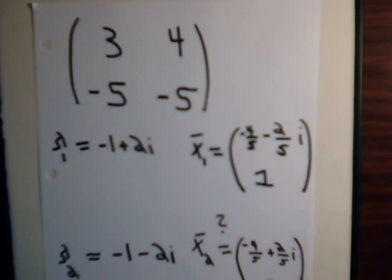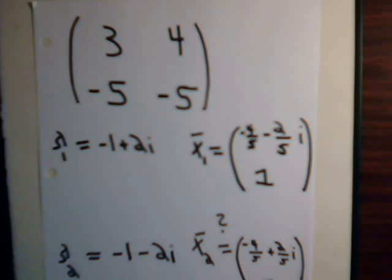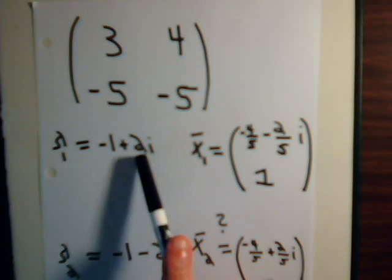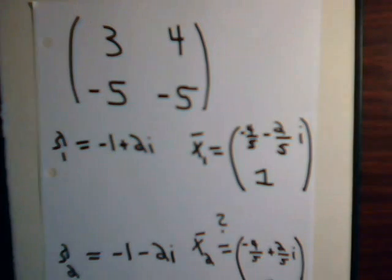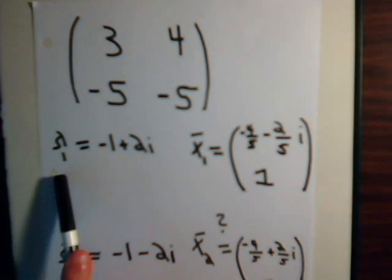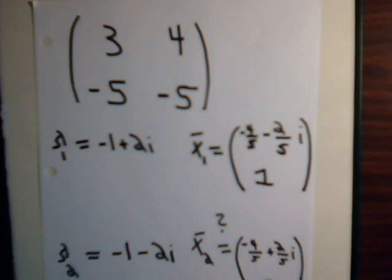We found out that the eigenvalues are complex and they occur as complex conjugates of one another. The eigenvector that corresponds to this eigenvalue we determined to be this. It is a complex eigenvector.